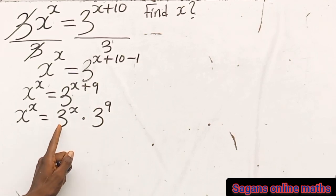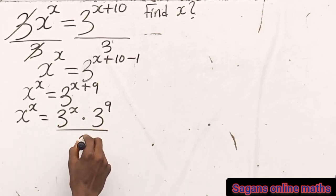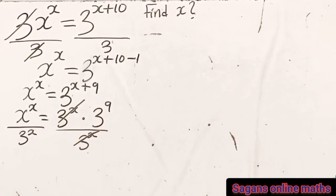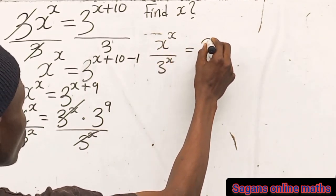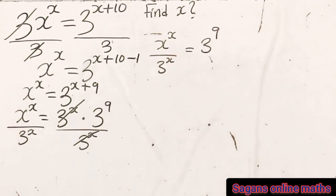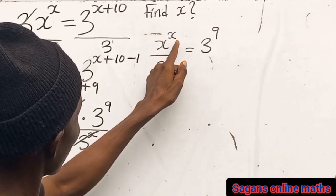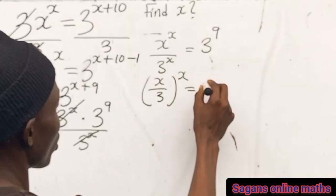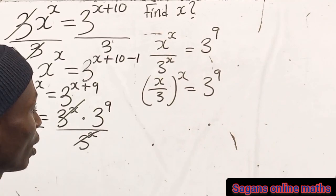One of the laws of indices says that since the bases are the same we can work with the exponents. What we are going to do is divide both sides by 3 to the power of x. So we divide here by 3 to the power of x and also divide here by 3 to the power of x. Observe that the power is common, so you can write this as x divided by 3 all raised to the power of x equals 3 raised to the power of 9.